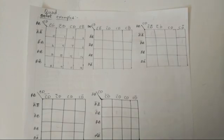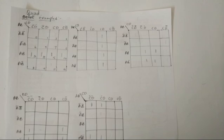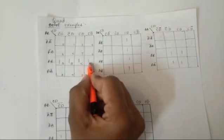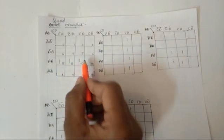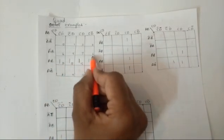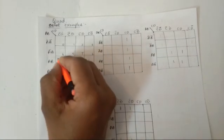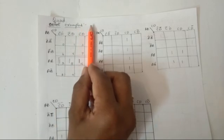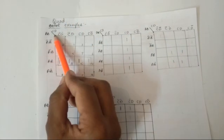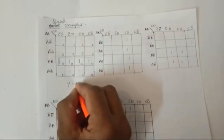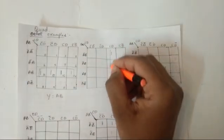Now I am going to discuss the quad possibilities. I have already entered the numbers here. The ones are arranged so that the maximum number of adjacent ones is four. After solving this, I group these four. The four terms cancel each other, so my answer is y = AB.